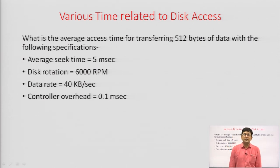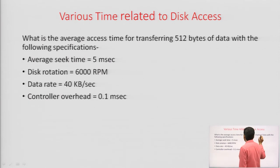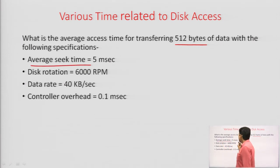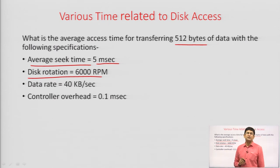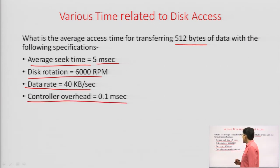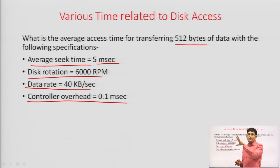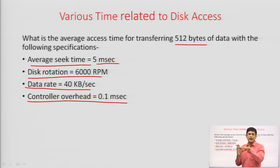The question asks: what is the average access time for transferring 512 bytes of data with the following specification? Average seek time is 5 milliseconds. The disk is rotating at 6000 revolutions per minute — we need to find the rotational latency. The data transfer rate is 40 kilobytes per second and the controller overhead is 0.1 milliseconds. It is assumed that on average it takes half a rotation to reach a particular sector, so we need to find the time for half a revolution.